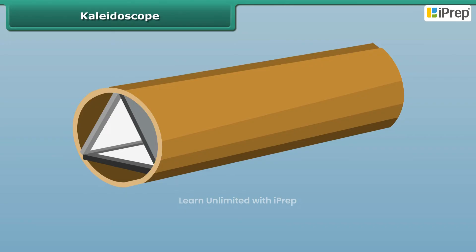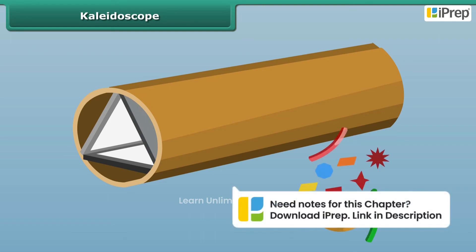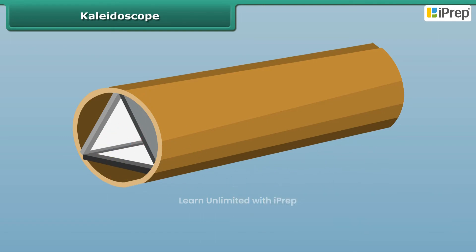Place on this glass plate several small pieces of colored glass and close this end of the tube with a ground glass plate. Now look through the peephole in a well-lit area.